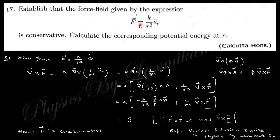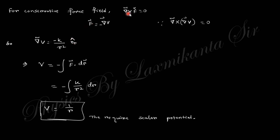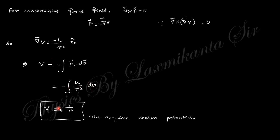Since curl F = 0, we can write F = −grad V. Therefore grad V equals the force expression, and V = ∫F·dr. Integrating gives V = 1/r as the scalar potential.